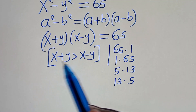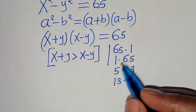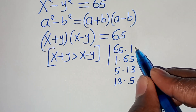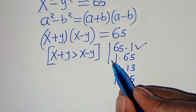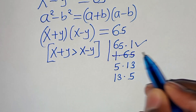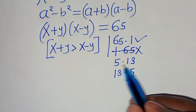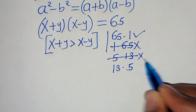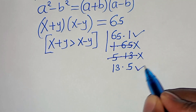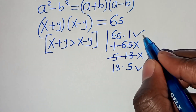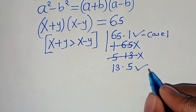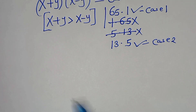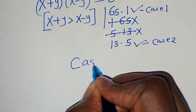Since x plus y is greater than x minus y: 65 is greater than 1, so this satisfies the condition. 1 is less than 65, so this pair is rejected. 5 is less than 13, so this is also rejected. 13 is greater than 5, so this is accepted. So we have Case 1 and Case 2.